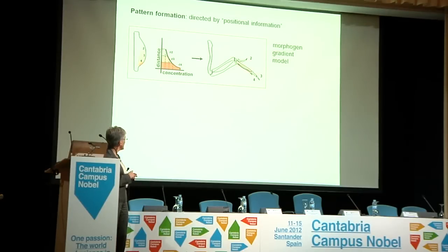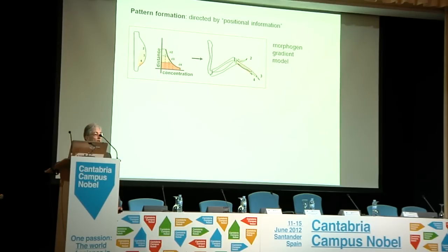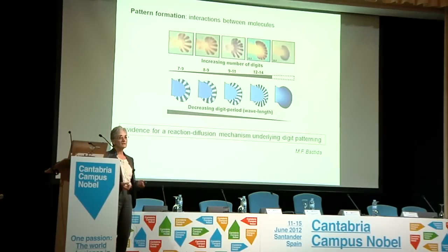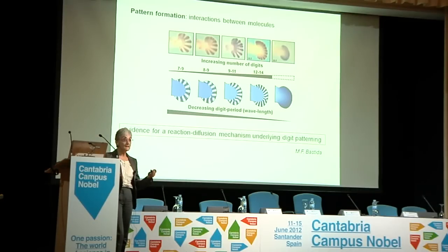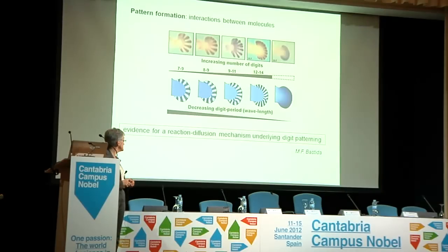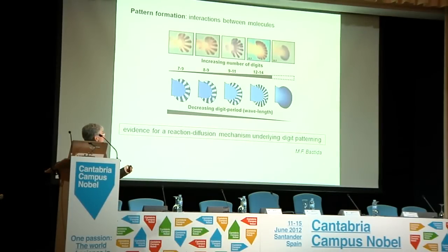Pattern formation is still not well understood. One of the models more commonly used — which applies in systems like Drosophila — is the model of positional information directed by gradients of morphogens. But there are other possible models, like reaction-diffusion models, in which interactions between molecules in uniform fields of cells end up giving, in a cell-autonomous manner, quite complex patterns of organization. This is one of the topics we are presently working on with mutants in which the pattern of the tissue is highly disrupted.